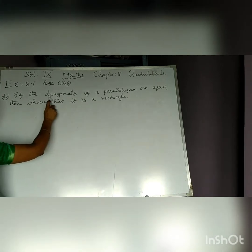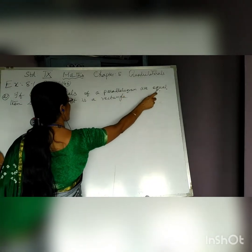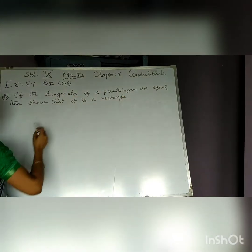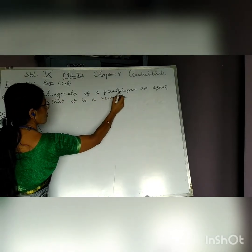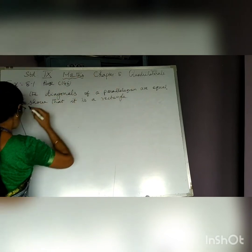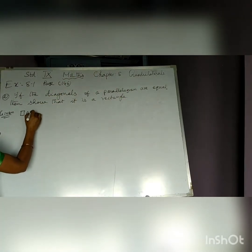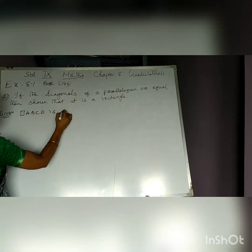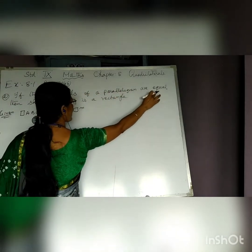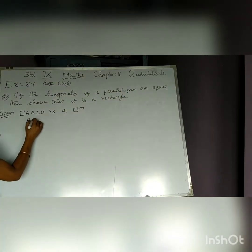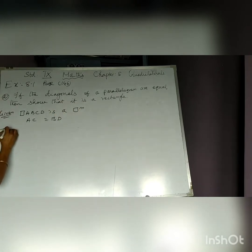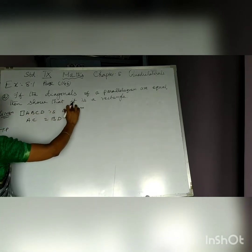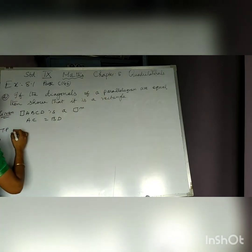Second question is: if the diagonals of a parallelogram are equal, then show that it is a rectangle. So, let us write what is given and what is to be proved. Diagonals of a parallelogram are equal — that is given. Therefore, quadrilateral ABCD is a parallelogram and its diagonals AC and BD are equal. What is to be proved? We have to show the same parallelogram with equal diagonals is a rectangle.